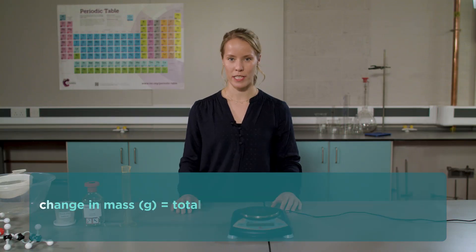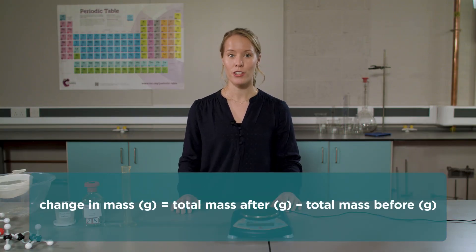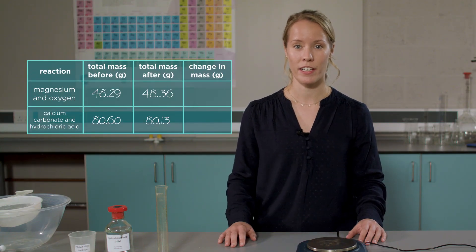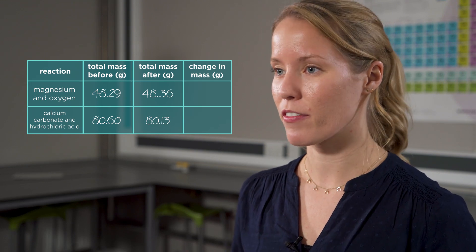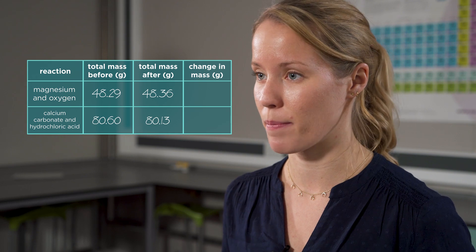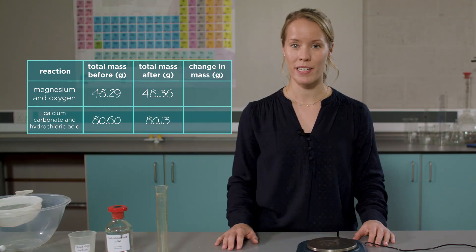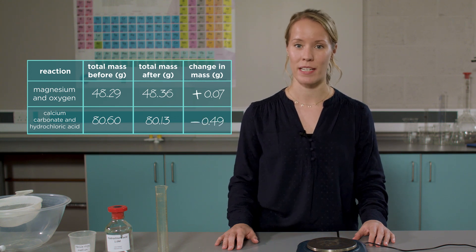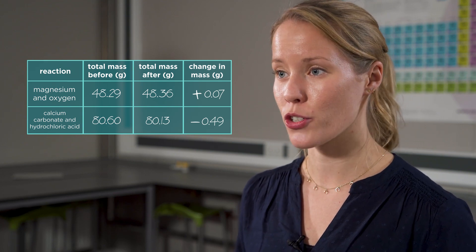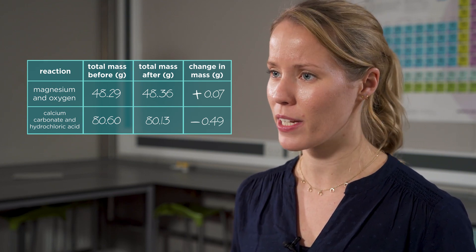It's now time to complete the results table by calculating the change in mass. To do this, you need to take the total mass before the experiment away from the total mass after the experiment. Your answer could be positive or negative — show this in the results table by putting a positive or negative sign in the final column. A positive change in mass means we have observed an increase in mass, whereas a negative change in mass means we have observed a decrease in mass. If we look at our results table, we can see that the magnesium has increased in mass, whereas the calcium carbonate and hydrochloric acid has decreased in mass. Taking into account the law of conservation of mass, we know that no atoms have been created or destroyed during the reaction. So how can we account for the change in mass?